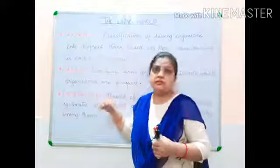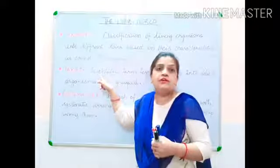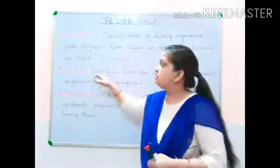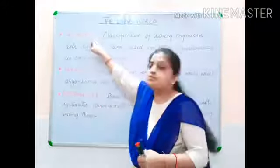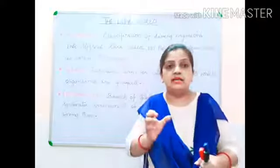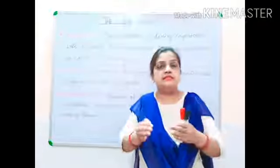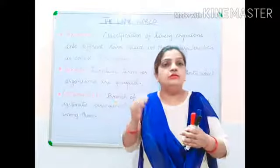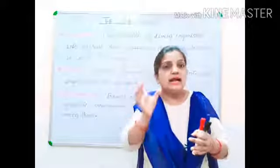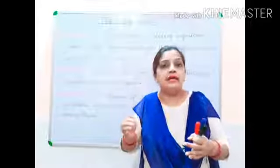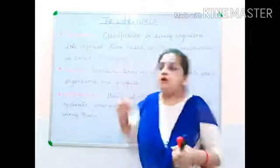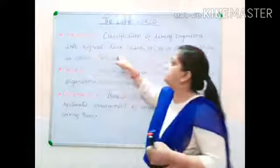Now what is taxonomy? Taxa is a plural word and taxon is a singular word. The word taxonomy is made up of two words: 'taxa', referring to different categories of organisms based on classification, and 'nomi' (N-O-M-Y), which means study. So taxonomy is a branch of science where we study about the classification system at different category levels, at different groups and subgroup levels.